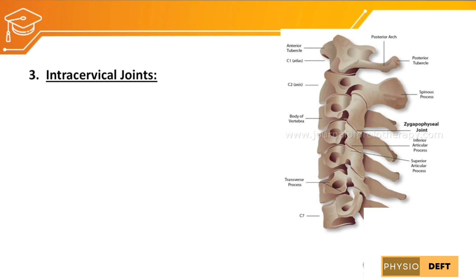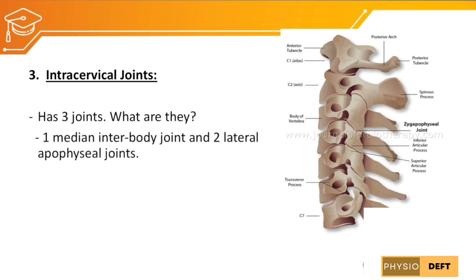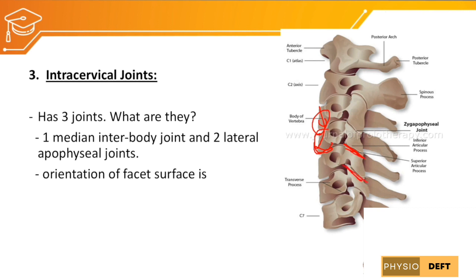The third joint in the cervical vertebral column is the inter-cervical joint, which has three joints: the medial interbody joint formed between the vertebral bodies anteriorly, and two lateral apophysial joints on the right and left. The orientation of the facet joint is 45 degrees to the horizontal plane, which is important in understanding the kinesiology of the cervical vertebra.